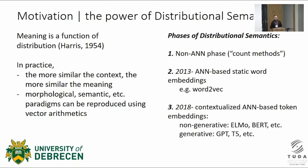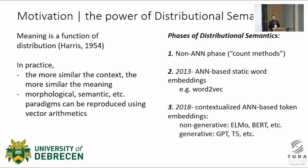Harris famously said that words that co-occurred with the same words had similar meanings. You don't need deep learning to harness distributional semantics, but artificial neural network-based systems — indicated as phases two and three in the slides — turn out to be better in a variety of tasks. These networks have become large with billions of trainable parameters; we have seen what they can do in generative tasks, consider GPT's capabilities.